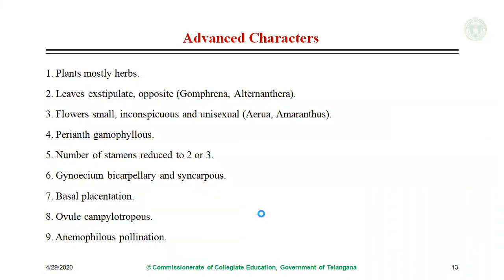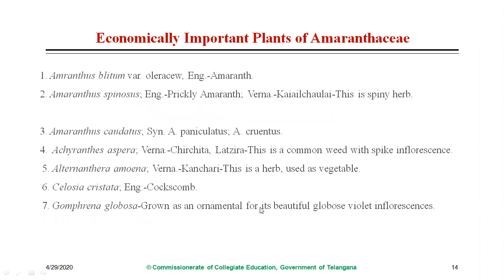Economically important plants of Amaranthaceae include Amaranthus blitum, Amaranthus viridis, Amaranthus spinosus — all leafy vegetables — Amaranthus caudatus as a medicinal variety, Achyranthes aspera as medicinally important, Alternanthera as a leafy vegetable, Celosia cristata (cockscomb) as an ornamental variety, and Gomphrena globosa also as an ornamental plant.